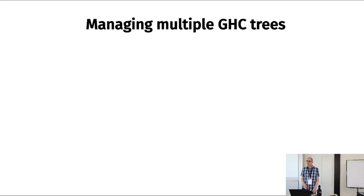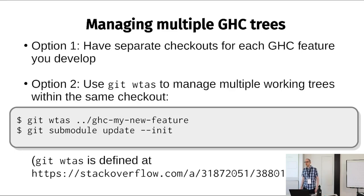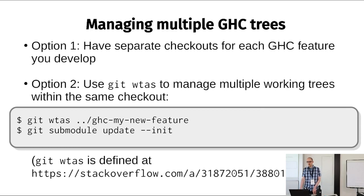One useful skill is managing multiple checkouts of GHC when fixing multiple bugs simultaneously. The most basic option is to just check out multiple copies with Git — crude but effective. Another way is Git Worktrees, a feature I haven't used much myself but which many people swear by. There are some aliases people have developed for more effectively managing worktrees inside Git. You can check out that Stack Overflow link in the slides for the aliases.